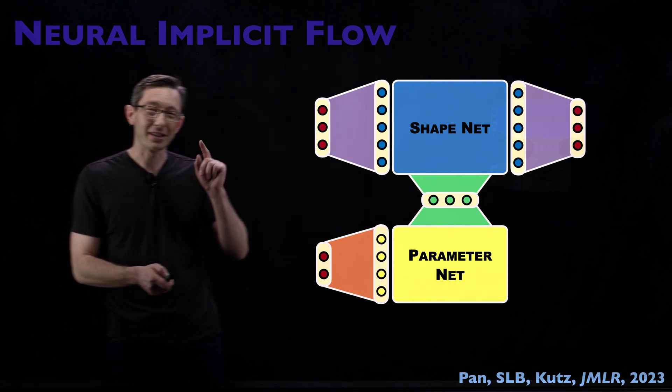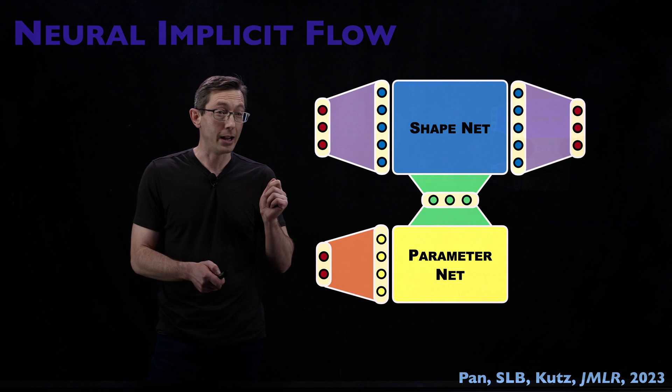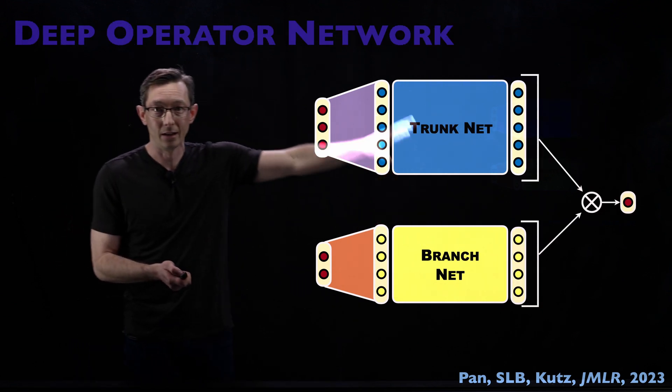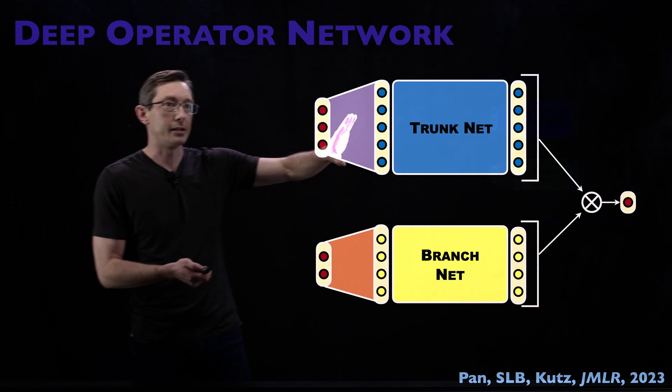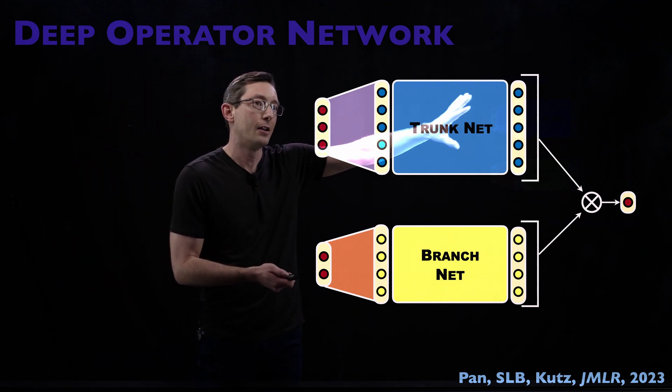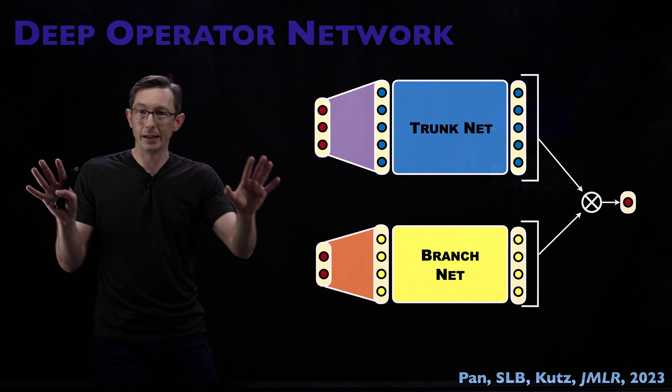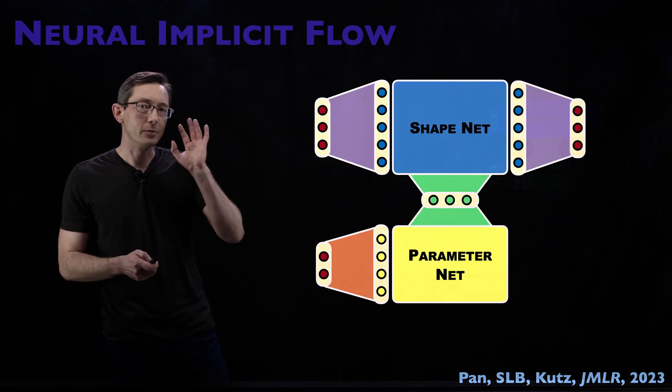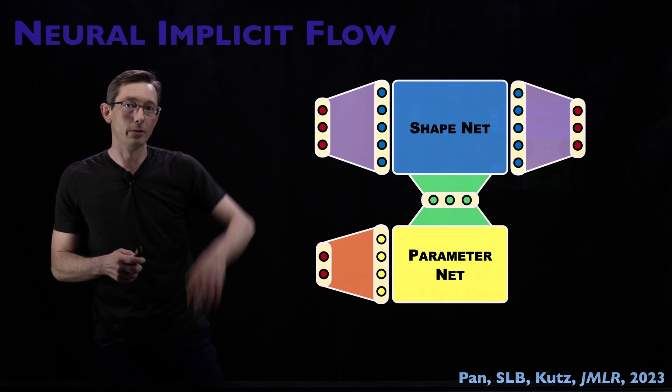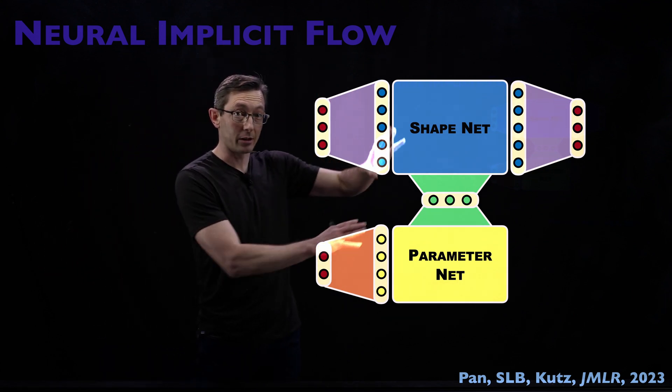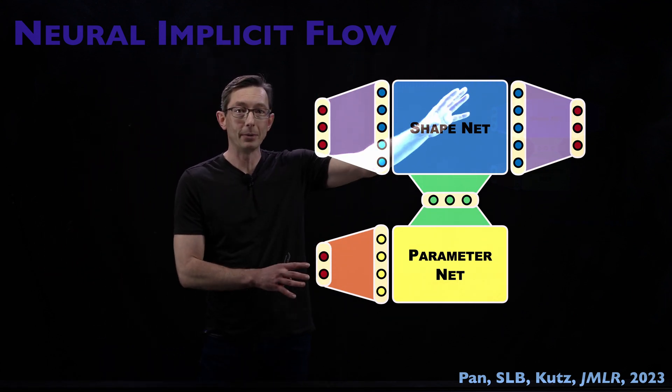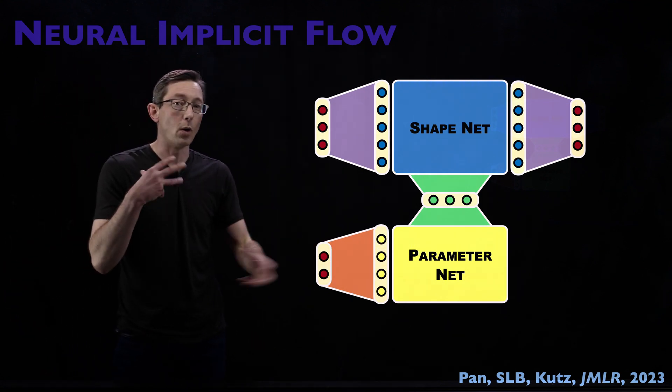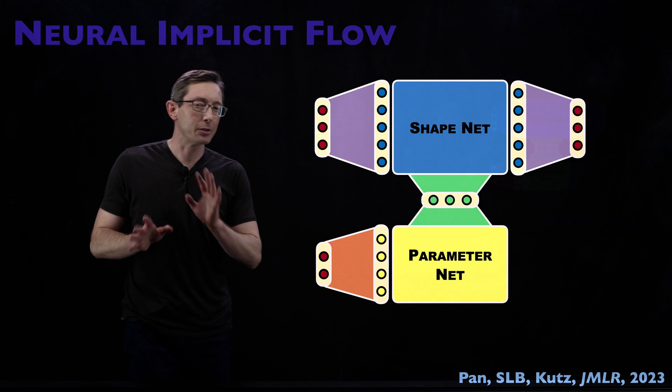You'll notice it looks a lot like a Deep O-Net, this kind of classic deep operator network from Karnia Dacus et al, where you have a trunk net and a branch net, this kind of split networks that you then recombine later. Xia Wu Pan's Neural Implicit Flow has a similar kind of split between a Shape Net and a Parameter Net. So I'm going to talk through how this works, what you can do with this, and it's actually really, really cool.